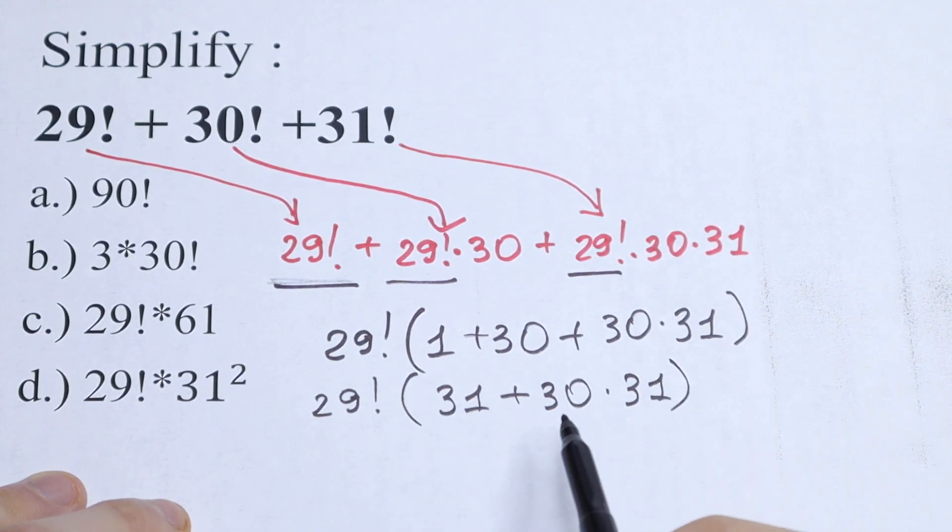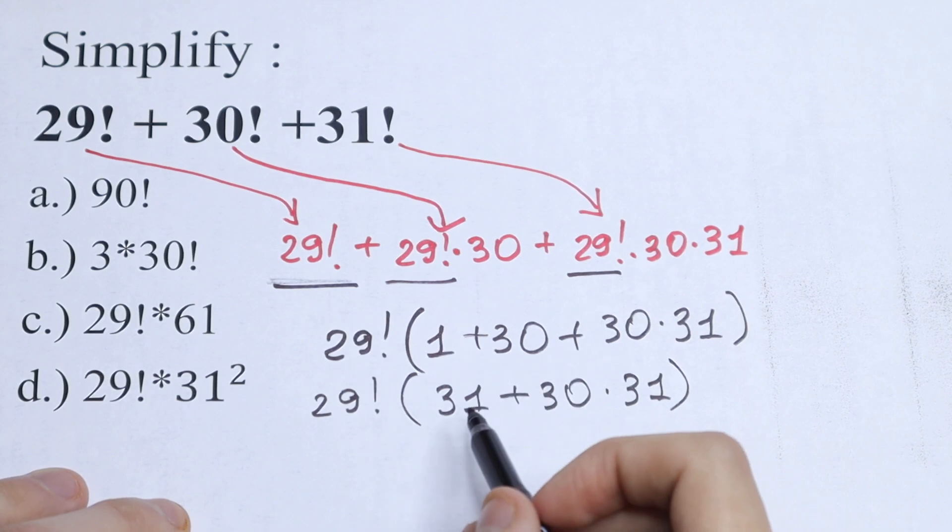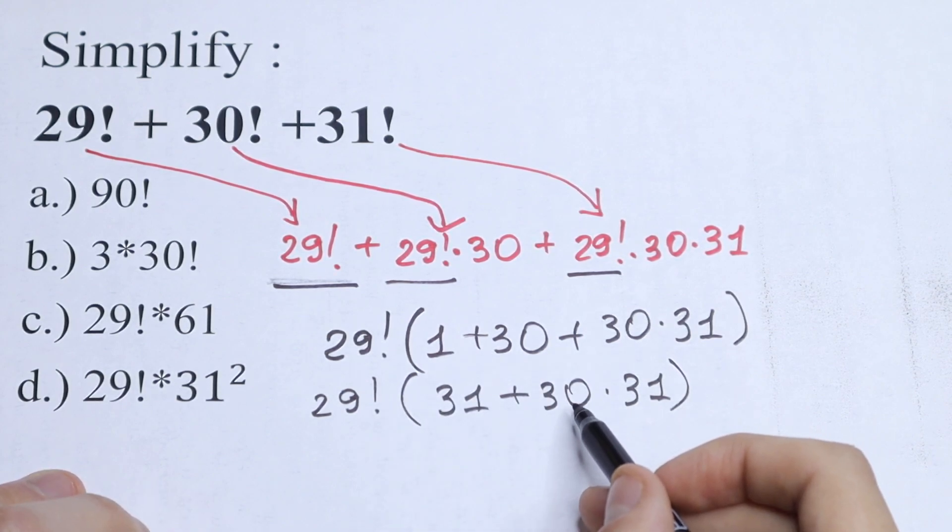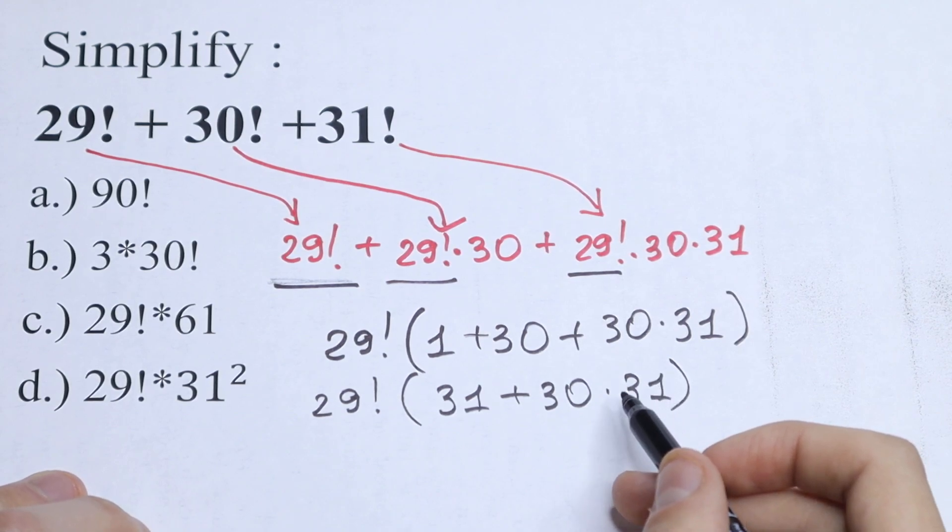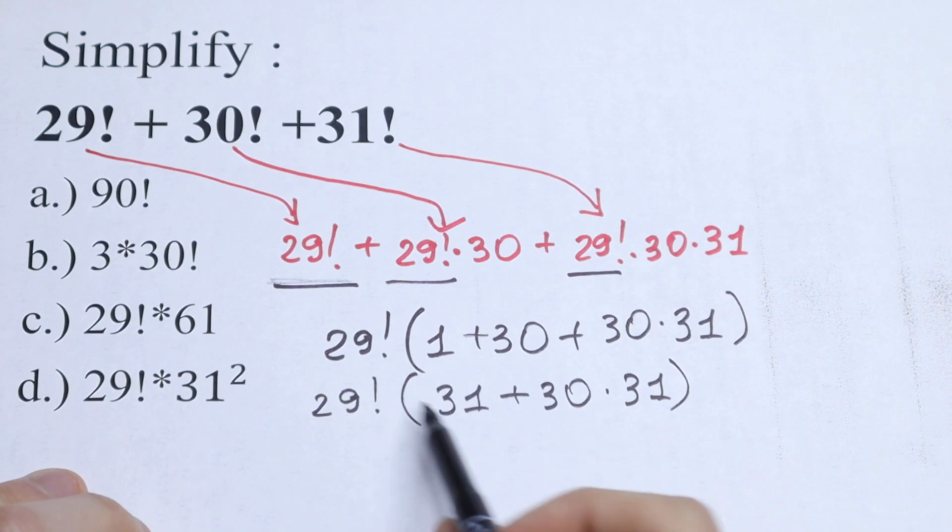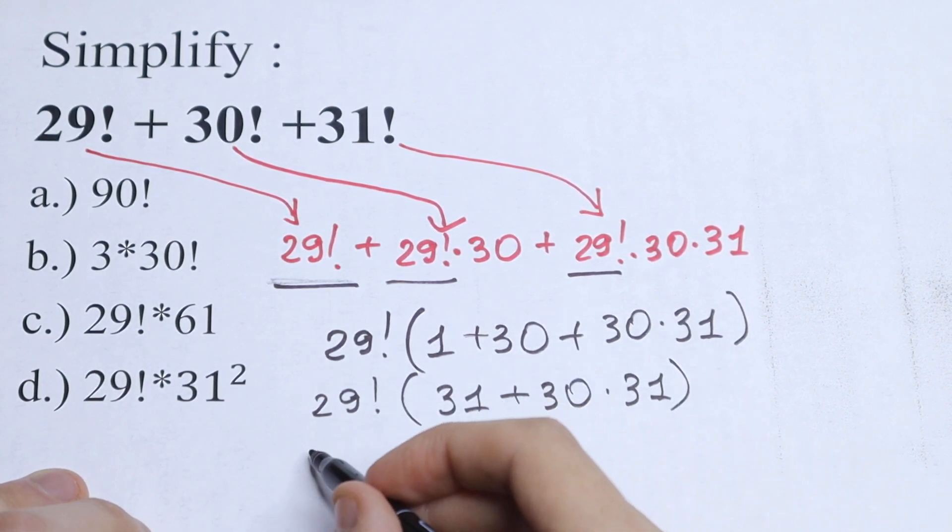Of course we can add this, because what we have in our parentheses? In parentheses we have 1 times 1 times 31, plus 30 times 31. So as a result we will have 1 times 31 plus 30 times 31, we will have 31 times 31.